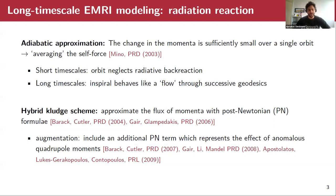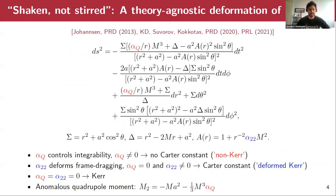We will be using here the hybrid-kludge scheme, which approximates the fluxes with post-Newtonian formulae. And because we will be dealing with spacetimes that deviate from those of Kerr, we'll augment the post-Newtonian formula with additional terms that represent the effect of the anomalous quadrupole moments that we will have in our spacetime.